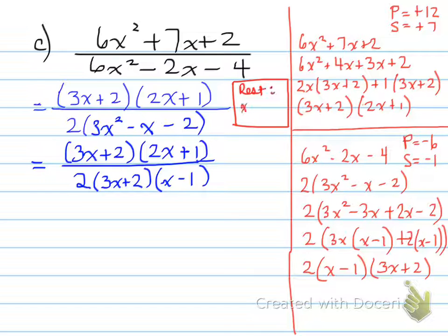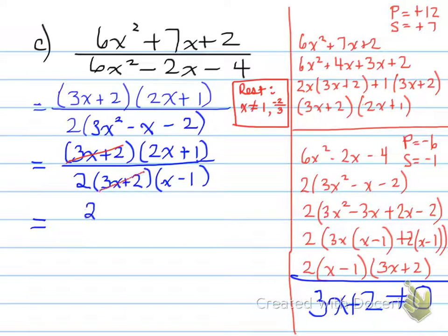So restrictions were normally 1 and negative 2 over 3, and I showed you how that came about. So what we would normally do is cancel. That's right, cancel, because we can cancel because we have a license to cancel, and that will leave us 2x plus 1 in the numerator and 2 times x minus 1 in the denominator.